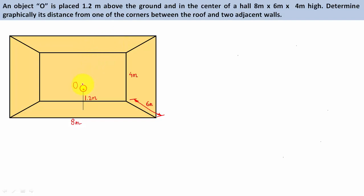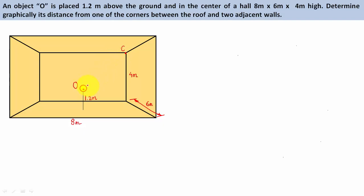The distance of this object has to be worked out from a specific point — the corner between the roof and two adjacent walls. You can take any corner at the roof. Let's take this corner at the top and represent it by the letter C. We are supposed to find the true distance between object O and corner C. Imagine a cable with one end tied at O and the other end tied at C, kept tight.